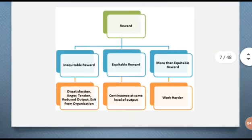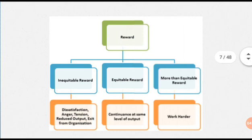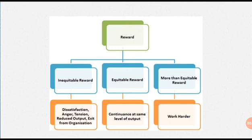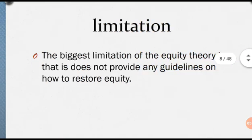Now understand this diagram — there is inequitable reward, equitable reward, and more than equitable reward. If the reward is inequitable, where you are not satisfied, you have dissatisfaction, fear, anger, and tension, and your output also reduces — you cannot give 100% and may leave the organization. In equitable reward there is a continuous same level of output, and in more than equitable reward you work harder and better for the organization and your own growth.